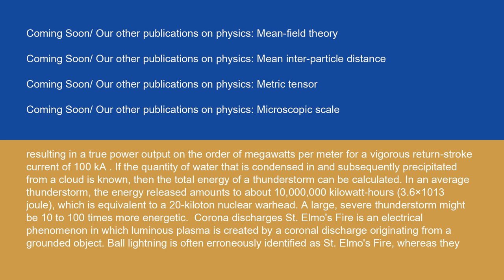If the quantity of water that is condensed in and subsequently precipitated from a cloud is known, then the total energy of a thunderstorm can be calculated. In an average thunderstorm, the energy released amounts to about 10 million kilowatt hours (3.6 × 10¹³ joules), which is equivalent to a 20 kiloton nuclear warhead. A large, severe thunderstorm might be 10 to 100 times more energetic.